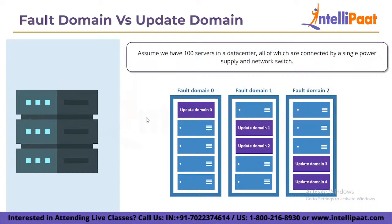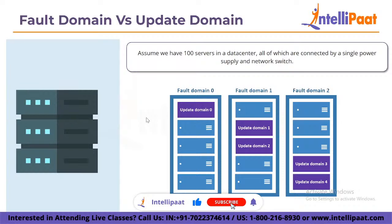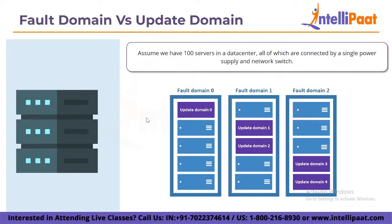The same concept applies to update domains. If a data center has 100 servers, they are logically divided into 10, 15, or 20 update domains. An update domain is a logical grouping. Server fixes and software updates must be done on a regular basis, and some changes require a server reboot. We don't want all servers to reboot at the same time. At any one time, only one update domain is rebooted. A rebooted update domain is then given 30 minutes to recover before maintenance on a different update domain is initiated.